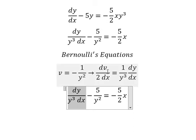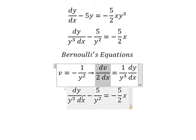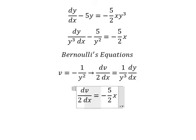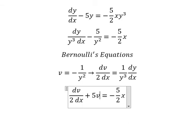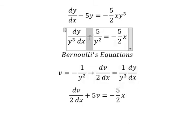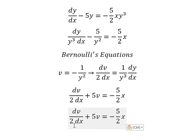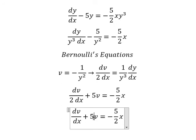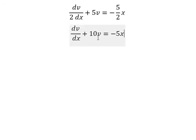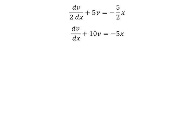We substitute this term. This term becomes positive 5v because negative times negative gives positive. Next, we multiply both sides by number 2.